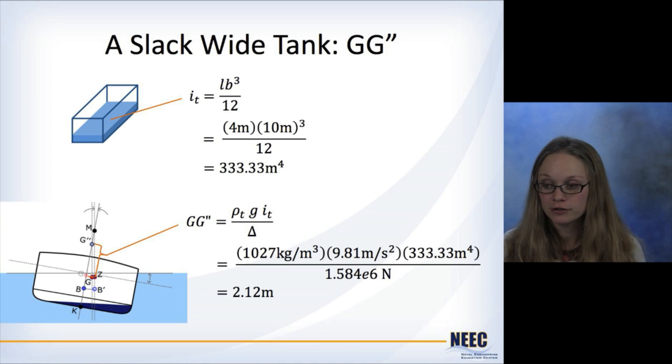Because the tank is rectangular, the moment of inertia of the surface of the fluid is equal to the length times the beam cubed of the tank divided by 12. So we plug in our numbers and we get 333 meters to the fourth. Then take that, plug in the numbers that we've got for density, gravity, the moment of inertia and divide by weight. And then we get the free surface correction is 2.12 meters.